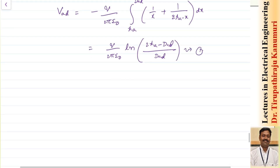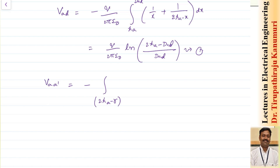Now let us take the voltage at conductor A between A and the image conductor A dash. This can be written as integration from 2 times H_A minus R, because the electric field inside the conductor is zero — it is an equipotential surface. The electric field starts from the surface of the conductor at radius R, and the distance between the two conductors is two times H_A minus R up to the surface R.